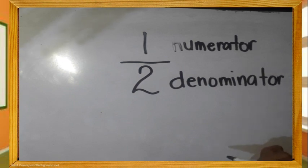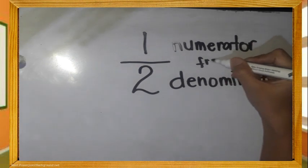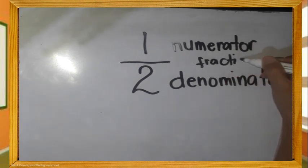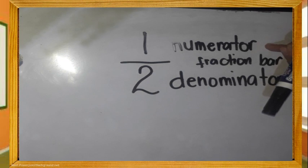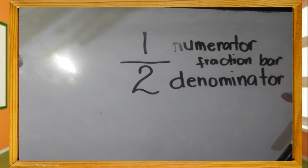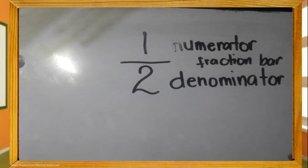E ano ang linyang nasa gitna? Ito ay ang fraction bar. Tandaan natin: ang nasa taas ay ang numerator, ang nasa baba ay denominator, at ang pumapagitan sa dalawang numero ay tinatawag na fraction bar.